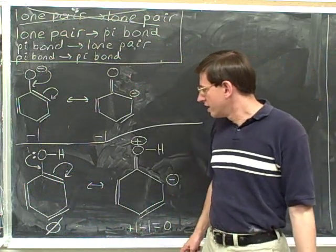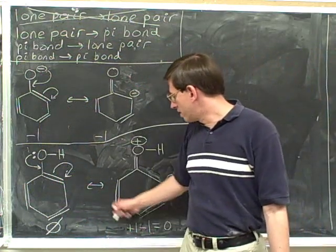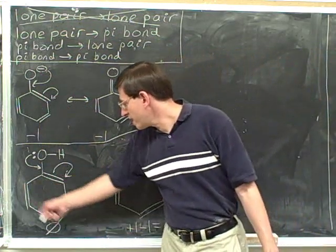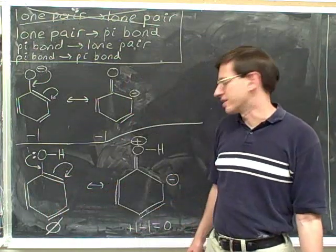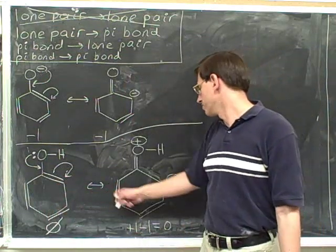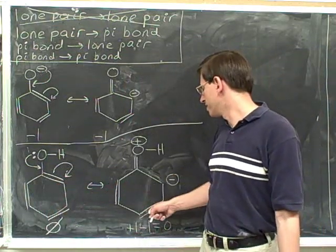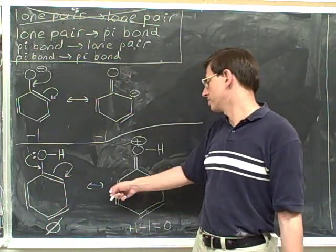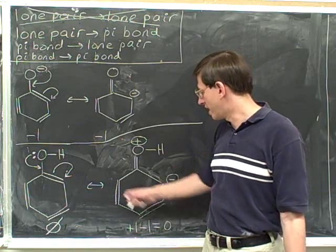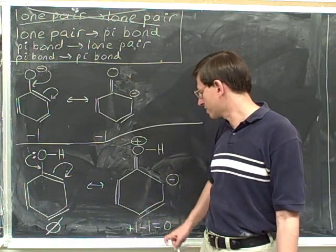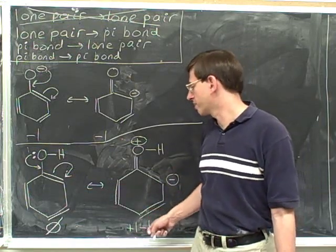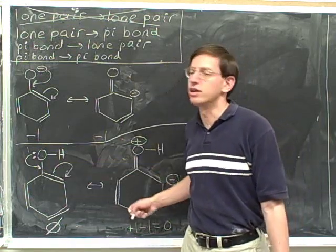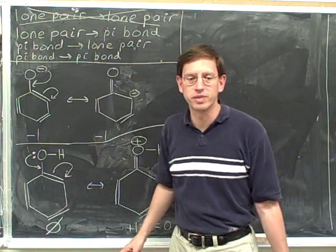And once again, since there are no arrows pointing to these pi bonds, we're not going to move them around. I forgot to draw these pi bonds in originally, but I should have. Now I've got them back in the picture — these pi bonds are not changing because we didn't draw any arrows going to or from them.